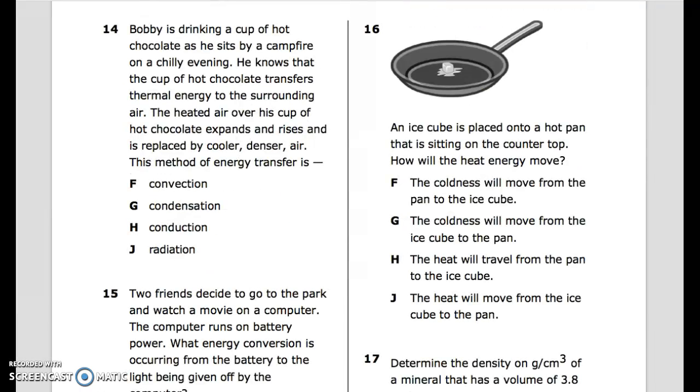Question 16: An ice cube is placed onto a hot pan that is sitting on the countertop. How will the heat energy move? F. The coldness will move from the pan to the ice cube. G. The coldness will move from the ice cube to the pan. H. The heat will travel from the pan to the ice cube. J. The heat will move from the ice cube to the pan.